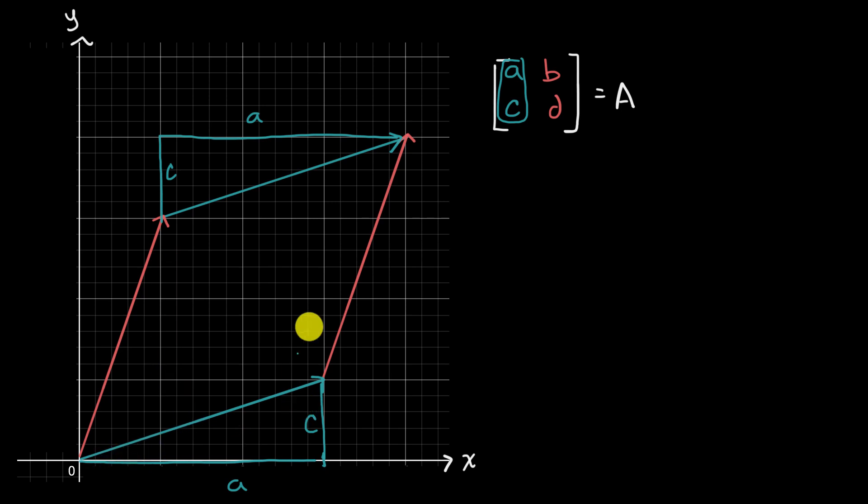So we have this vector, and then we have the BD vector. In the X direction, it goes a distance of B. And in the vertical direction, it goes a distance of D. So this right over here is D, and this distance is D. And we can see that the parallelogram created or defined by those two vectors, its area is right over there.